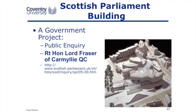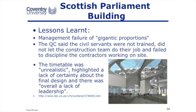Here are some famous project reviews — you could go and Google these. Do you remember the Scottish Parliament building? It was scheduled to cost up to £40 million and it cost £431 million. Because it was a government project, there was a public inquiry. The findings said that the lessons learnt were there were management failures of gigantic proportions. People weren't trained, people didn't do their job, there was no discipline on the construction site. And interestingly, the timescale was unrealistic — think about our triangle of project management — and there was a lack of certainty about what was required. So they didn't know what they were doing and they didn't have enough time to do it in, which is unsurprising that the cost went out of control.